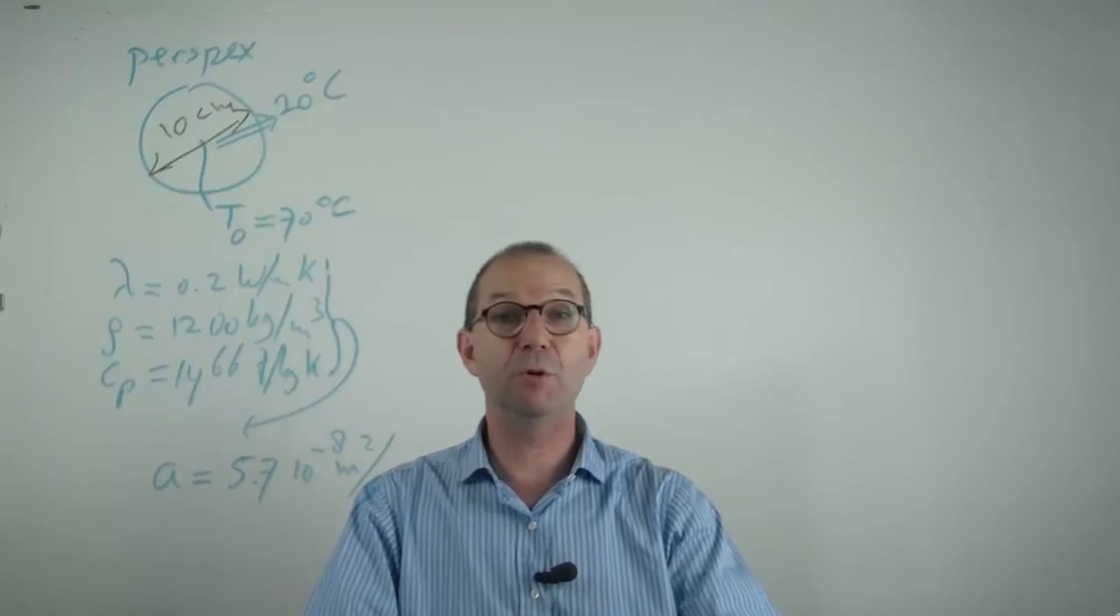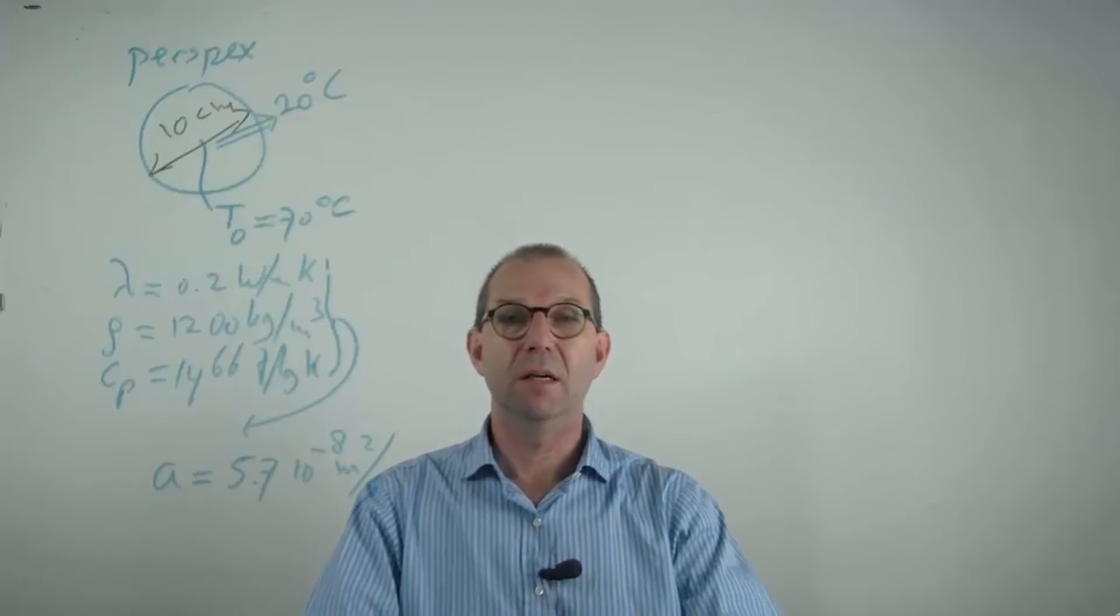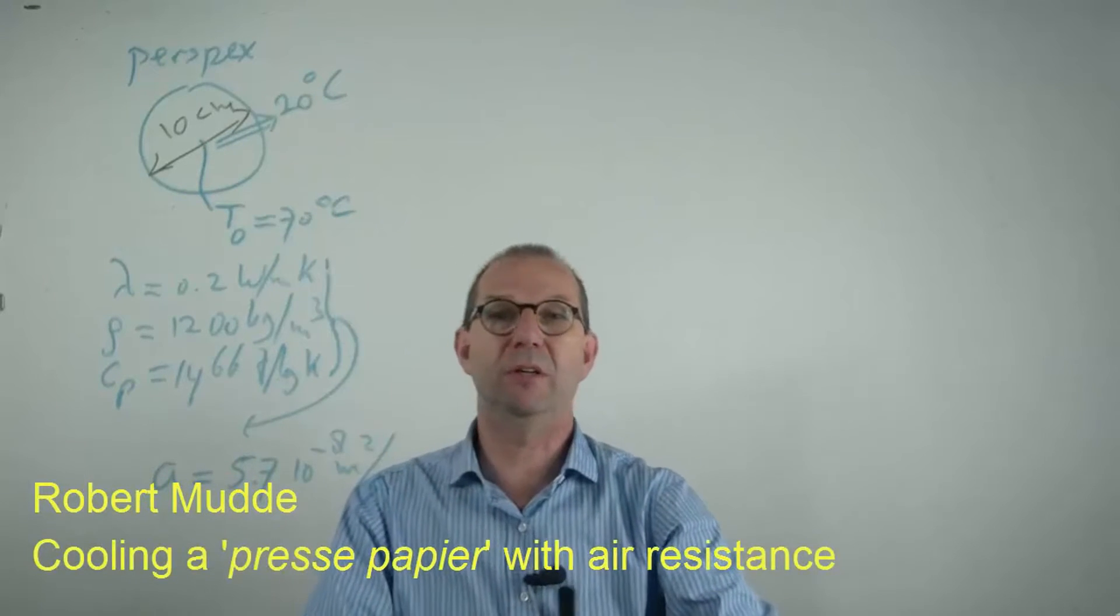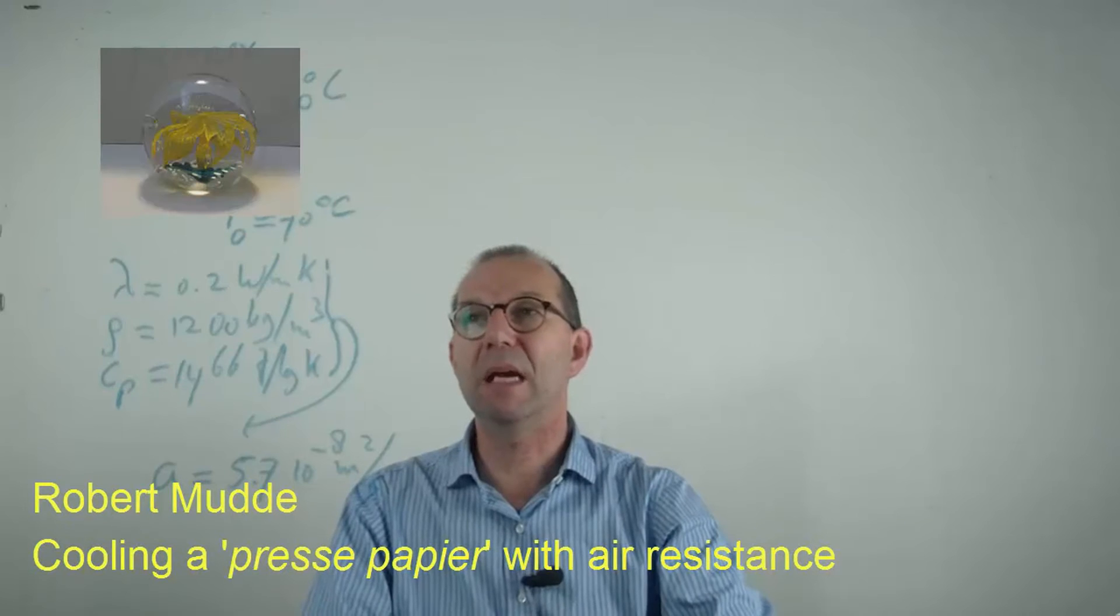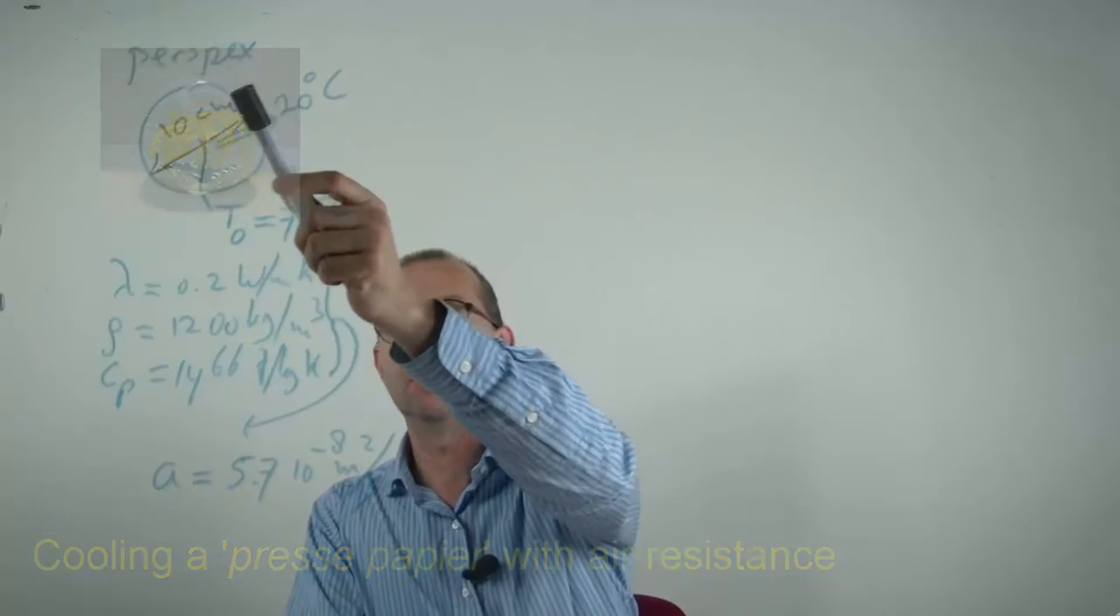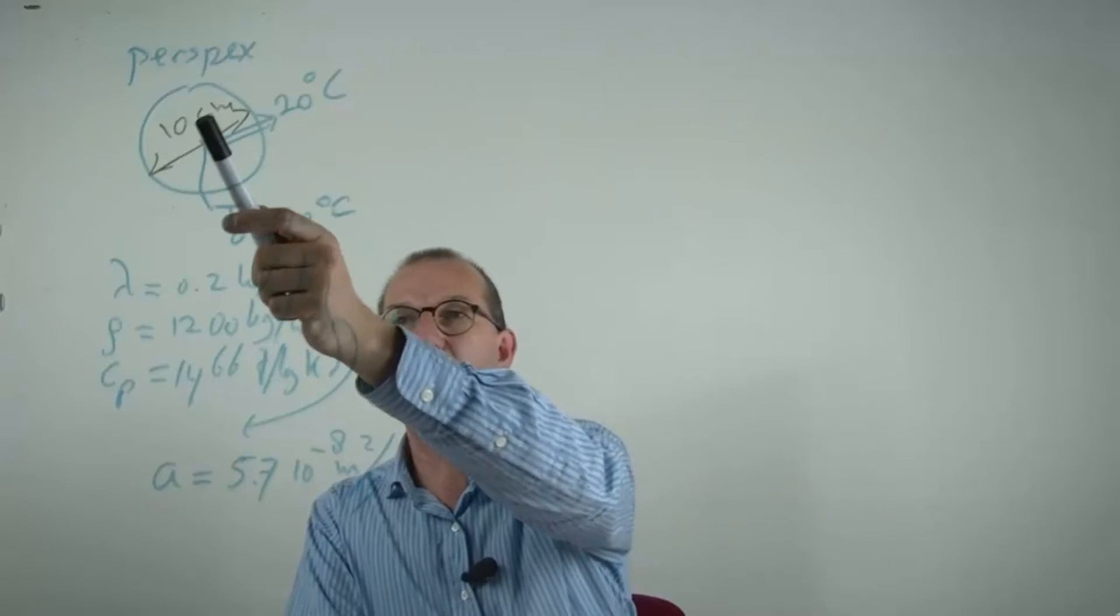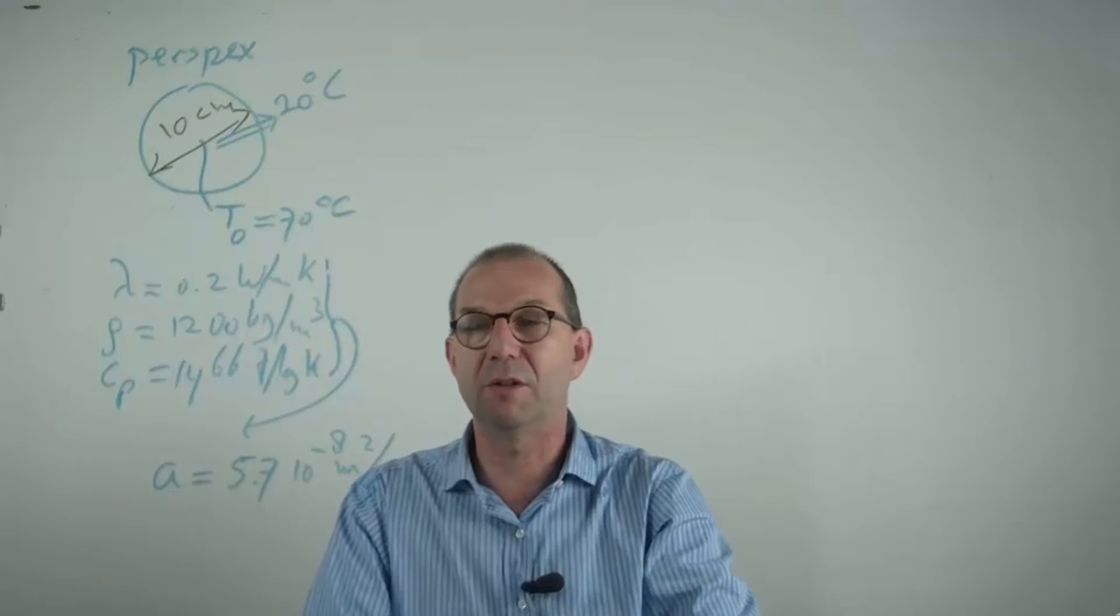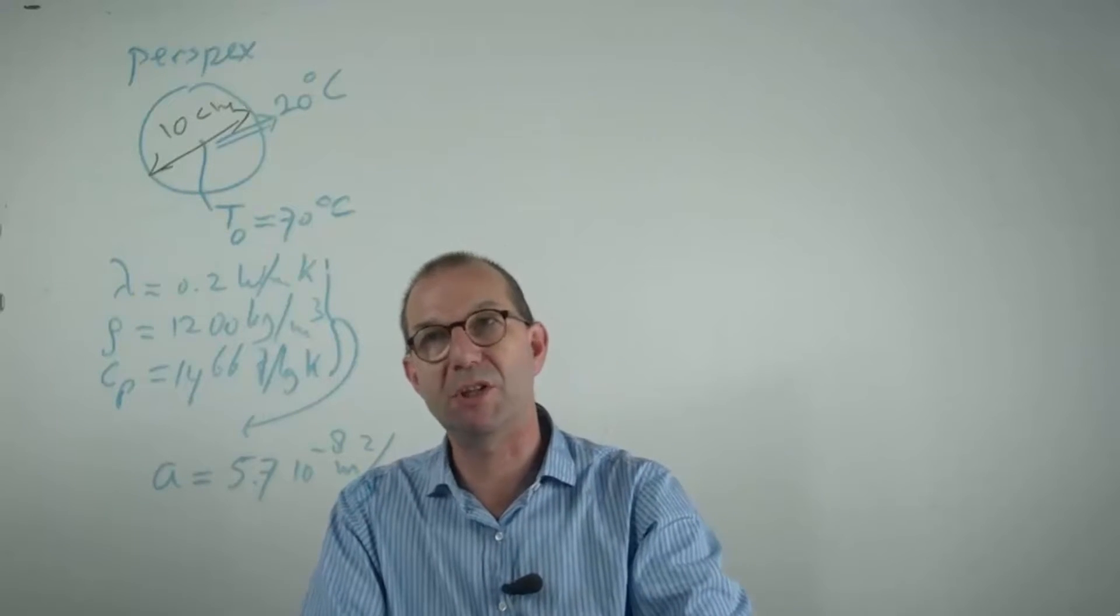Hi, welcome to the glass plate. In one of the earlier examples we discussed a perfect sphere, a presse papier, being made at a temperature of about 100 degrees that has to cool down. We analyzed the situation when we take it out of the oven and it's no longer 100 but now 70 degrees Celsius.